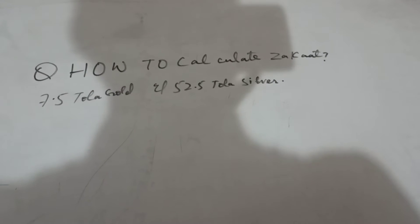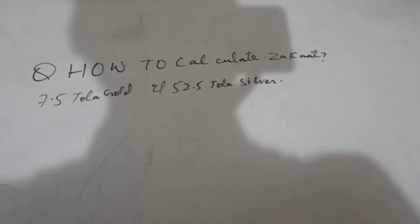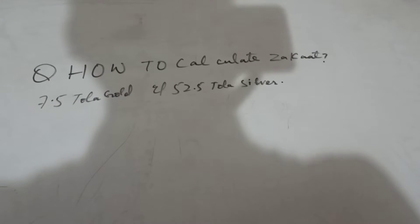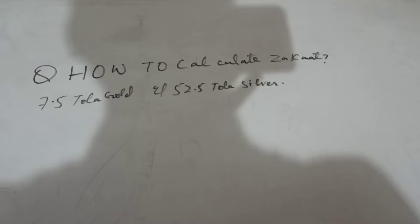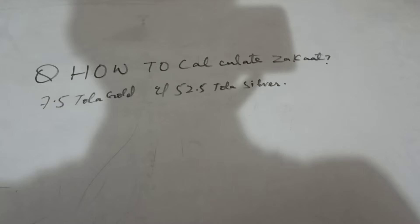As-salamu alaykum wa rahmatullahi wa barakatuhu. How to calculate zakat? First, you have to know who has to give zakat. A person who has 7.5 tola gold and 52.5 tola silver. He has to pay zakat.